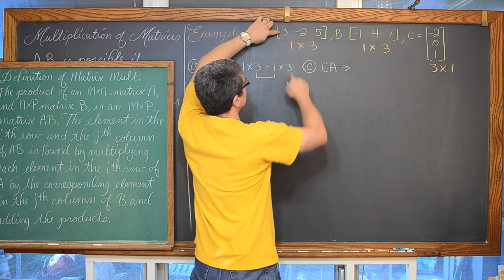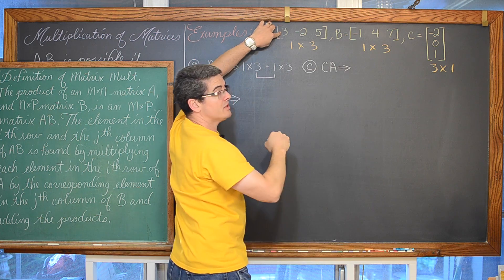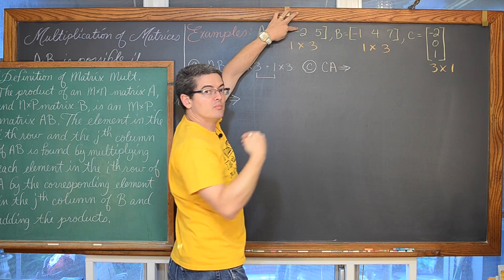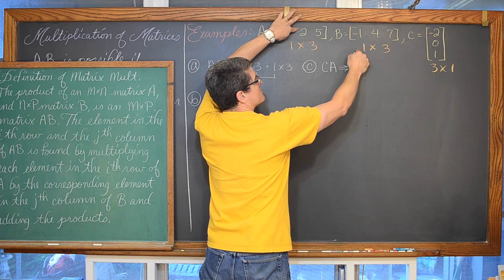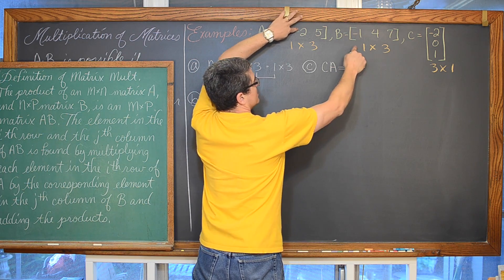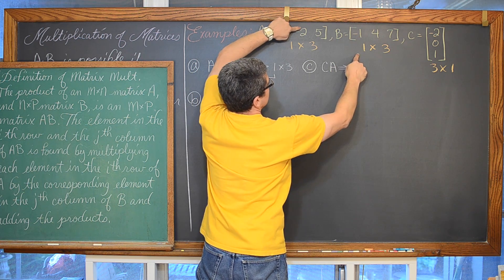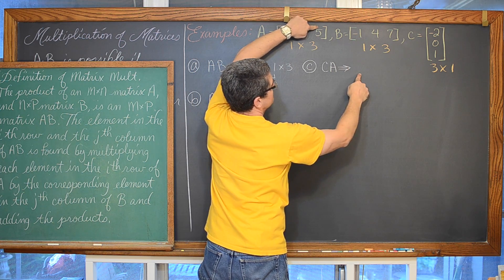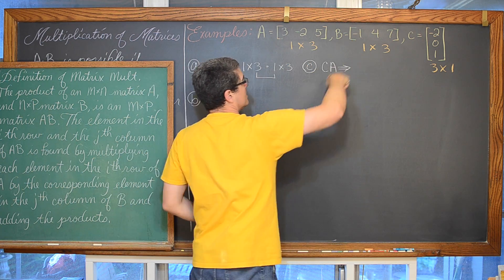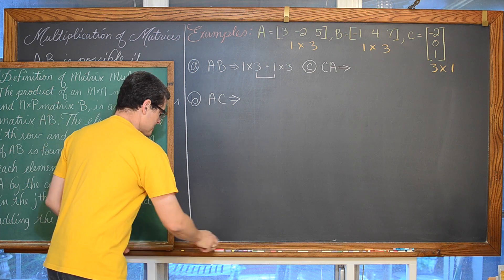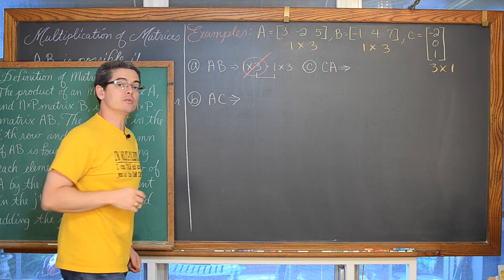That would mean something like 3 times negative 1, but as we move through the row of the first matrix and see negative 2, that needs to correspond with some number in the first column. You don't go across rows — you go across the row of the first matrix by the column of the second. So A times B is not going to have an answer — no solution.